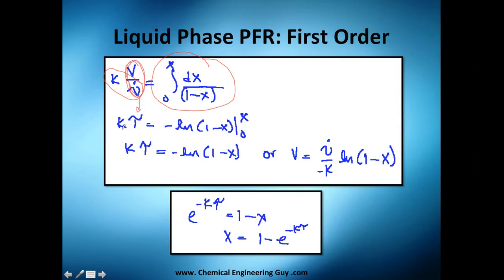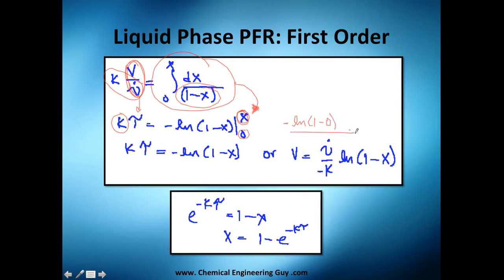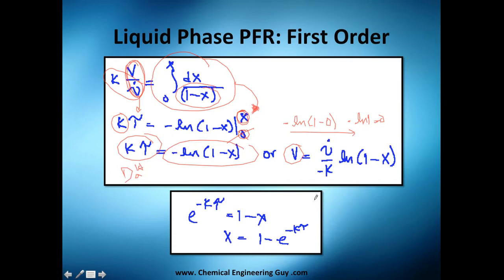By definition, the ratio of volumetric flow rate terms gives the space time τ, so we're left with τ equals the integral. Solving this with a table of integrals gives the negative logarithm of (1 minus X), evaluated from 0 to X. Since the logarithm of 1 is zero, this simplifies to k·τ = −ln(1 − X), which is the Damköhler number for a first order reaction. Solving for X gives X = 1 − e^(−k·τ).